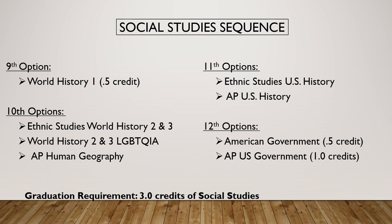For 11th grade, it's AP U.S. History or Standard Ethnic Studies U.S. History. In 12th grade, it's American Government — just one semester — or AP Gov, which is a full year. For those that take American Government and still need health or PE, oftentimes we have our seniors take a health class since they have that free gap from the 0.5-credit American Government course.